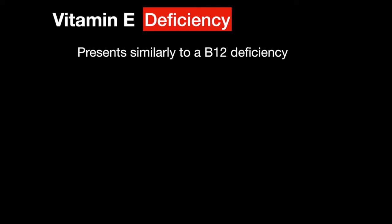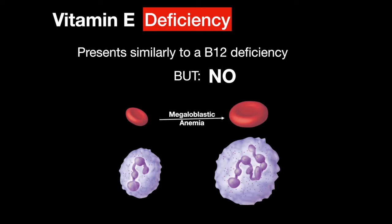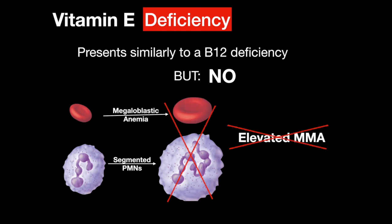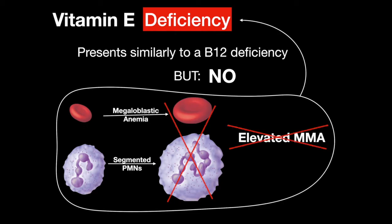These symptoms present similarly to a B12 deficiency. However, a lack of megaloblastic anemia, hypersegmented polymorphonuclear cells, and elevated methylmalonic acid levels points to vitamin E deficiency instead.